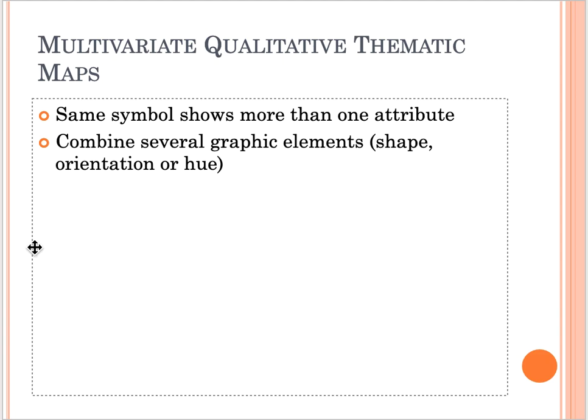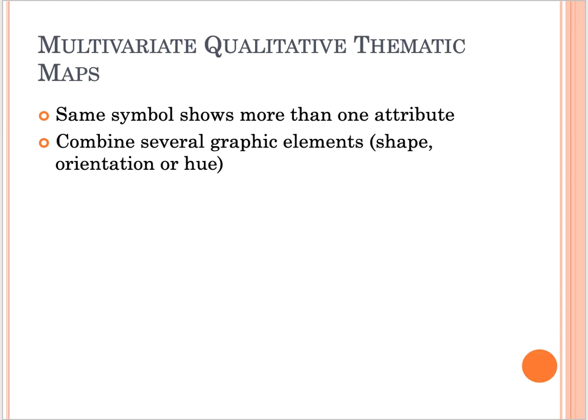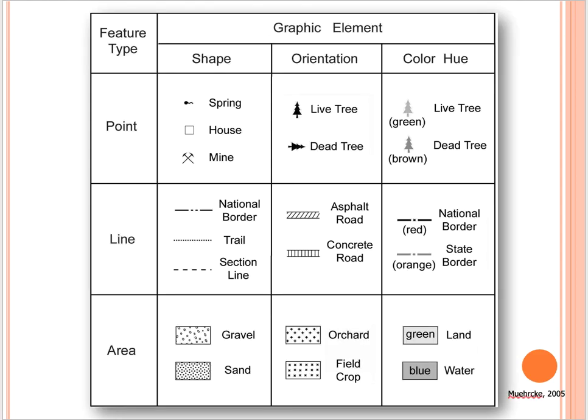Now we are going to talk about multivariate qualitative thematic maps. This is showing us that the same symbol shows more than one attribute, and it can combine several graphic elements such as shape, orientation, or hue.